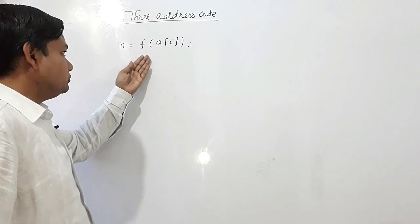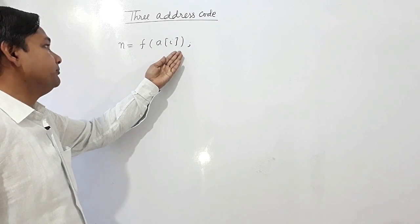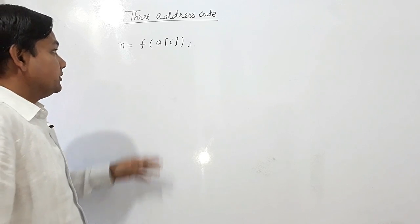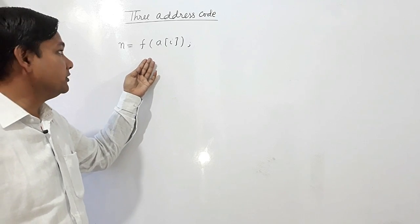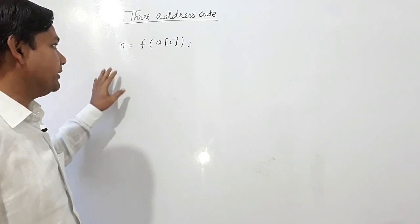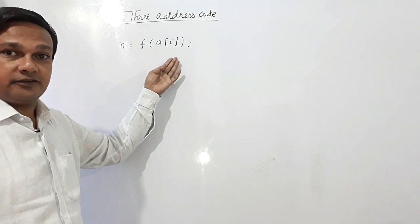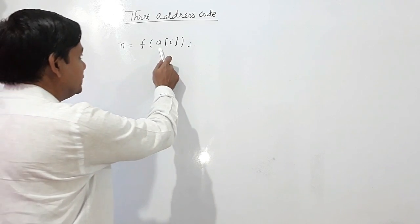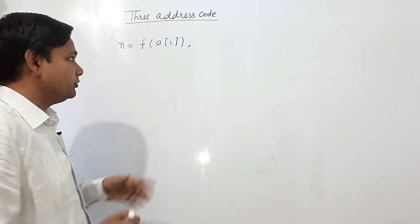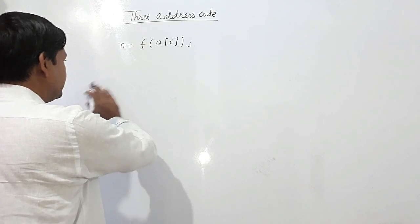Here n equals f of a[i], where a[i] is an array and f is a function. We have to write three-address code for this C code segment. First of all, a[i] has to be evaluated, it has to be written in terms of three addresses.